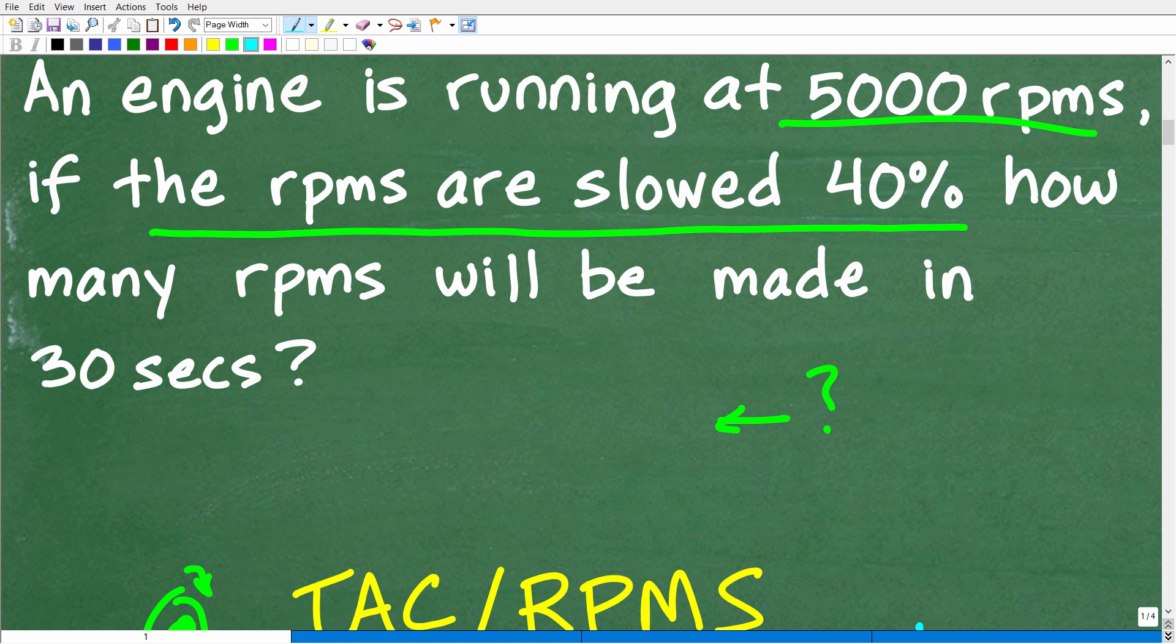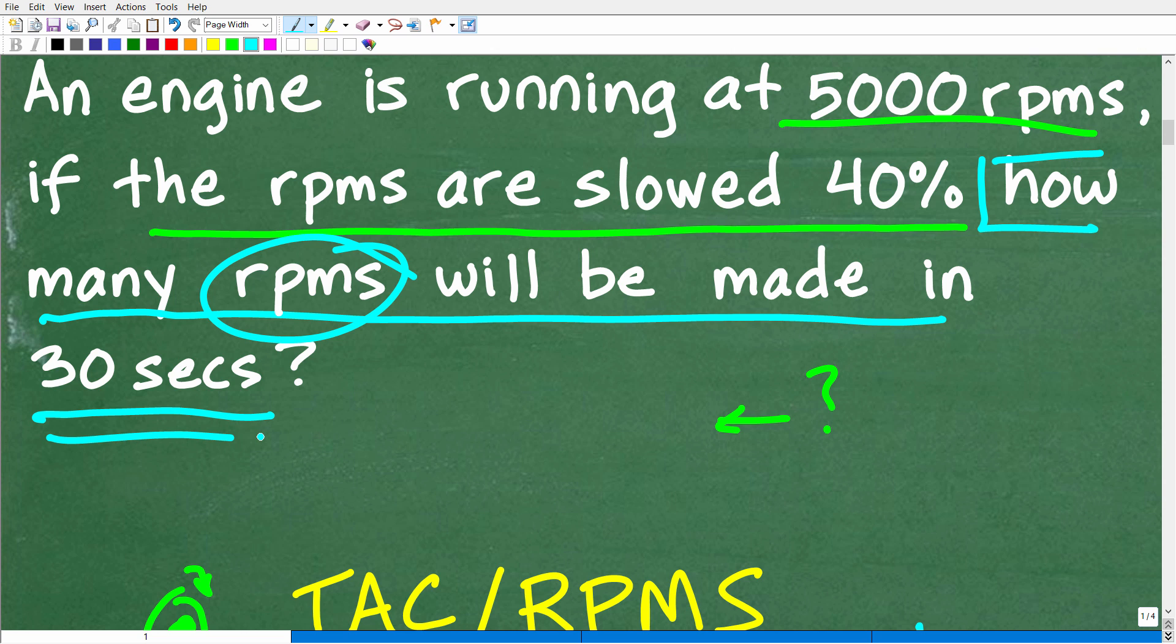Well, the question is, if the RPMs are slowed 40%, how, okay, we have to really hone in here, understand the question, how many RPMs will be made in 30 seconds or revolutions, okay? Because that's revolutions per minute, but, of course, we're under a minute. So, how many revolutions will be made in 30 seconds?